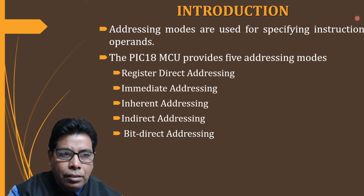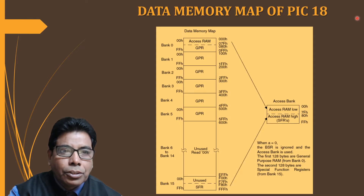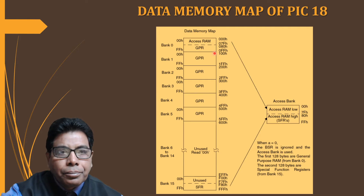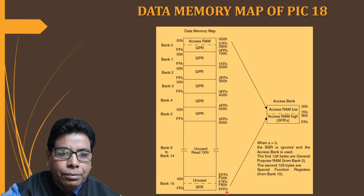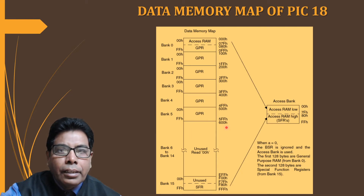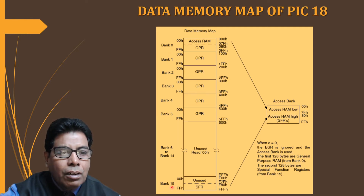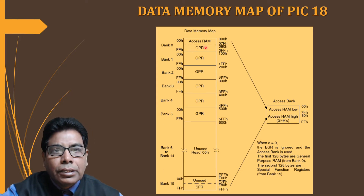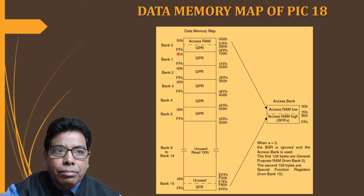Let us start with the data memory map before we go to the addressing modes. The data memory map starts from 000 and goes up to FFF — that is 4096 locations. It has 16 banks, bank 0 to bank 15 (0 to F), and each bank has 256 locations, from 00 to FF.